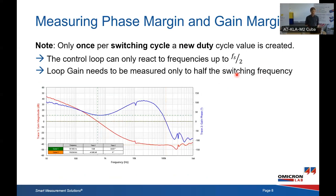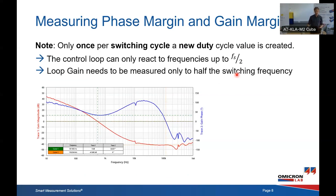When we measure phase margin and gain margin, don't forget that this is a sampled system. If it's a switching regulator, we don't need to measure the control loop above half the switching frequency. If you measure to the switching frequency or a little bit higher, you can normally see the switching frequency in the measurement. In this example the switching frequency was at 300 kilohertz, and this peak here is from the switching frequency.